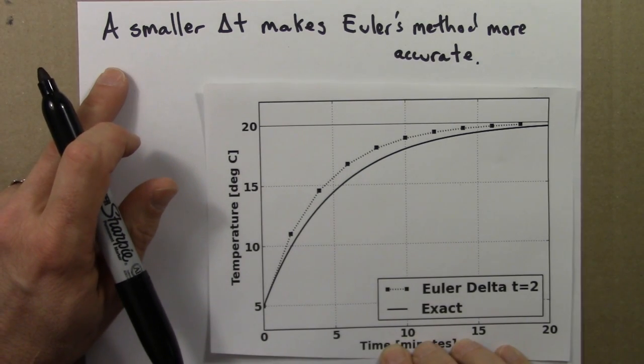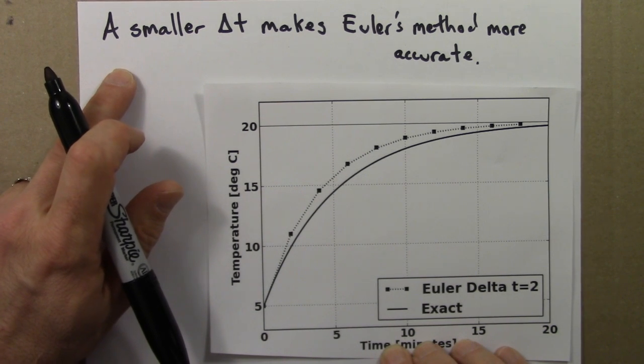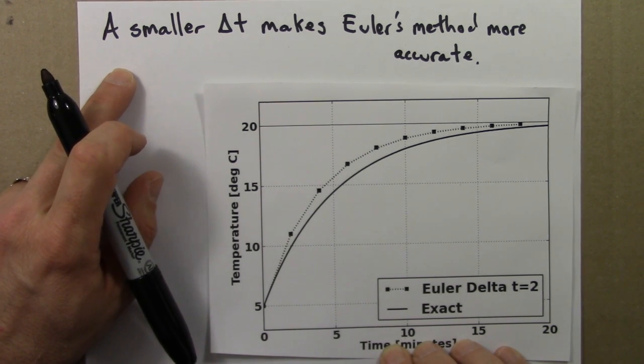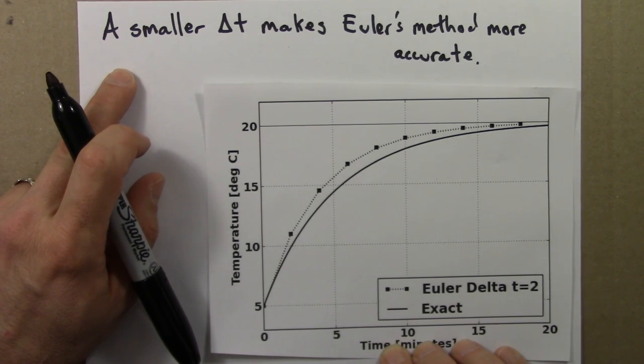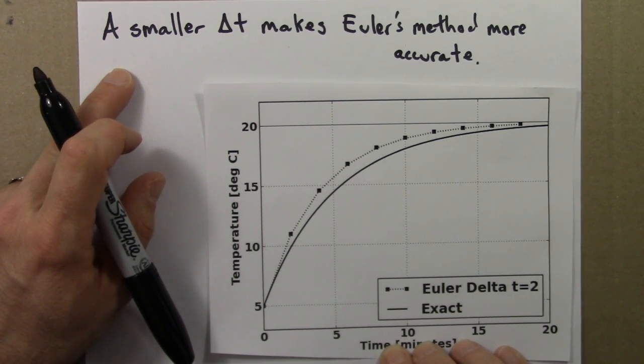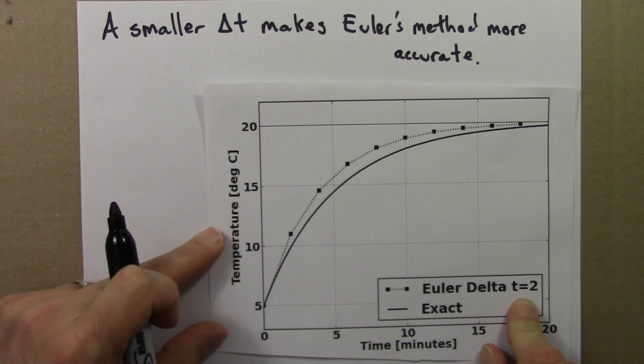A smaller delta t makes Euler's method more accurate, and we can see why. The reason Euler's method is inaccurate is that we're pretending that a constantly changing rate is actually constant over some time interval. Over a time interval of 2 minutes, that rate might change quite a bit.